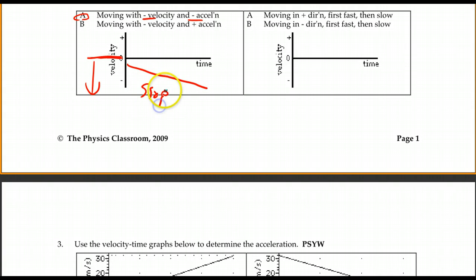The slope, as we will see below, is equal to the acceleration, the delta V divided by delta T, the rate of change of velocity.